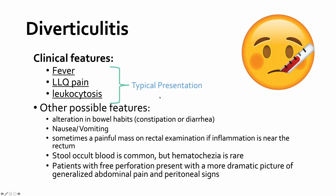The hallmark clinical features of diverticulitis are three things: fever, left lower quadrant abdominal pain, and leukocytosis — usually all three present together. Additional features include altered bowel habits alternating between constipation and loose stools, nausea and vomiting, a possible palpable painful mass on examination, and stool occult blood. Frank hematochezia is rare. Patients with free perforation present with a much more dramatic picture — generalized abdominal pain, peritoneal signs, rebound tenderness, and high fever.